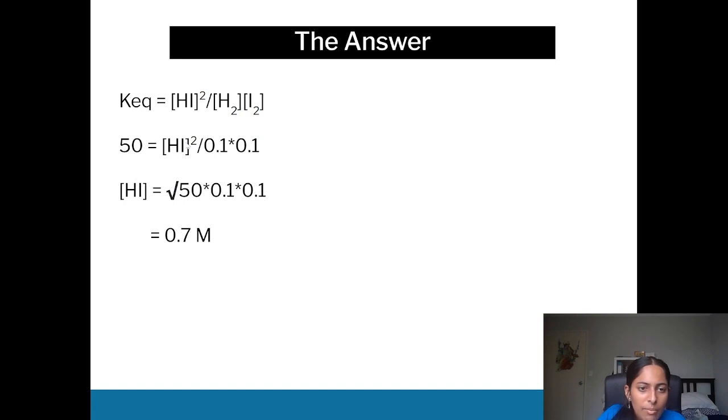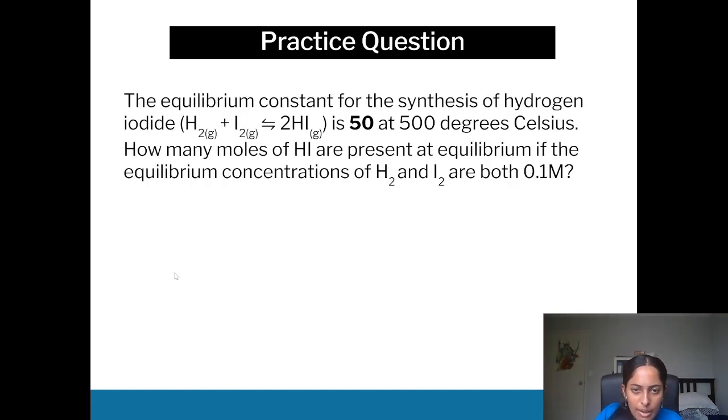Therefore, HI is going to be - because it's a square we have to root all of it. So therefore you would pretty much do 50 over 0.1 times 0.1 and you would root all of that, and your answer should be 0.7 molar. The lowest number of sig figs is one, so I just did it as 0.7.